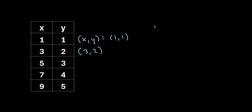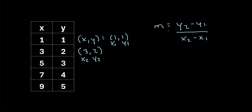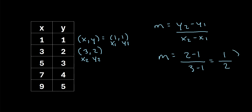To calculate the slope, usually abbreviated as m, we can use this formula: y2 minus y1 over x2 minus x1. For example, we can let the point 1,1 be our x1 and y1, and choose the next point as our x2 and y2. Plugging in: m equals y2 minus y1, which is 2 minus 1, over x2 minus x1, which is 3 minus 1. So 2 minus 1 is 1, and 3 minus 1 is 2. The slope is 1/2.